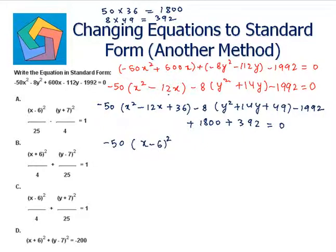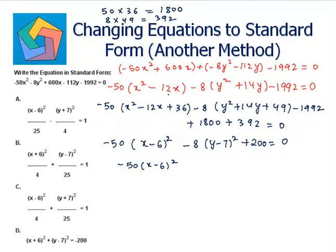This gives us minus 50 times (x minus 6)² minus 8 times (y minus 7)² plus 200 equals 0. Subtracting 200 from both sides: minus 50(x minus 6)² minus 8(y minus 7)² equals minus 200.